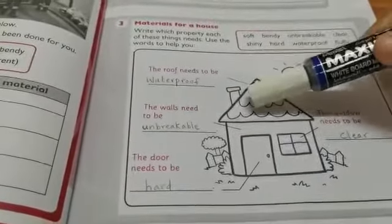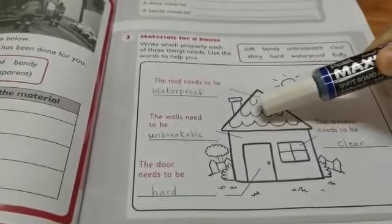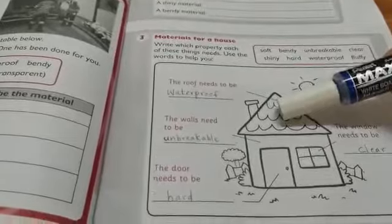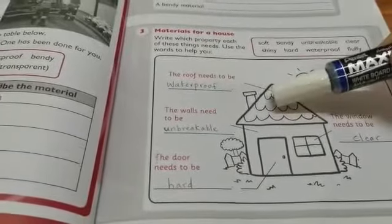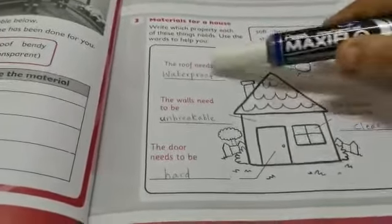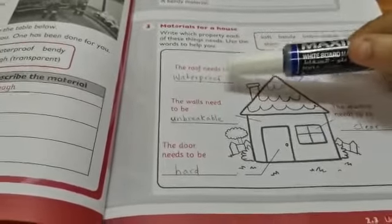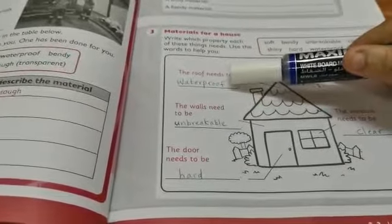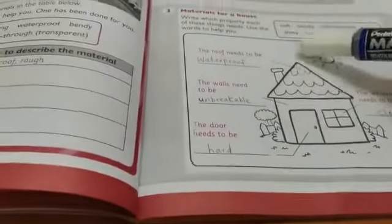The first one is the roof. Can you see the roof, or the top part of the house? If you are looking up, you can see the top part of your house. That's called a roof. This roof must be waterproof. What do you mean by waterproof?